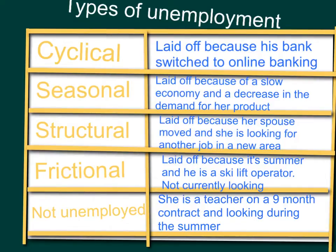The last category in this table here says 'not unemployed.' Keep in mind that in order to be considered unemployed, you have to be not only out of a job, but you also have to be actively looking for a job. If you look at the blue descriptions here, you can probably tell that they're all lined up incorrectly.